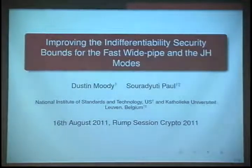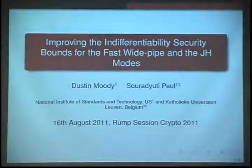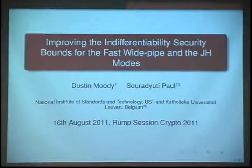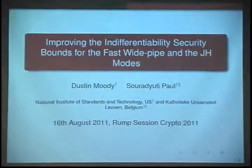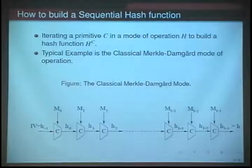We show the indifferentiability security bounds for two modes of operation: Fast Wide Pipe and JH, and we are able to improve the bound. That is the subject of this talk.